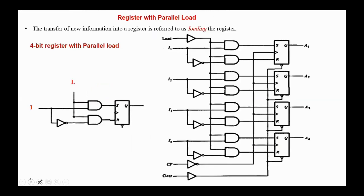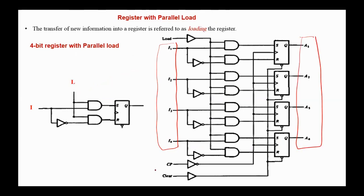This is the circuit diagram of a 4-bit register with parallel load implemented using SR flip-flops. It has 4 input data lines and 4 outputs as well, the clock pulse and the clear signals, and the load control. In order to understand the operation of the register, I will split one stage of the circuit.